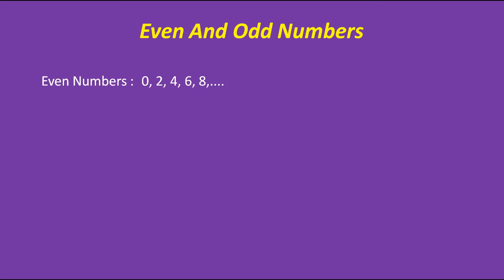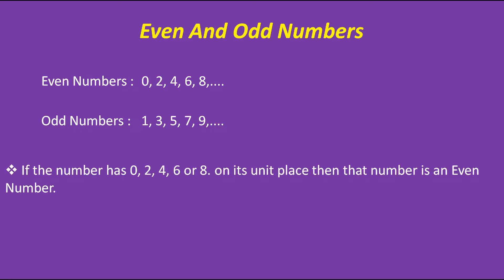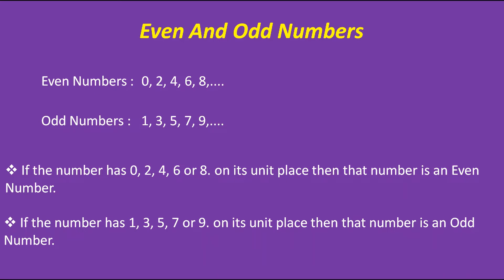Before that, I just want to recall about even and odd numbers. As you all know, even numbers are 0, 2, 4, 6, 8 and so on, and odd numbers are 1, 3, 5, 7, 9 and so on. If you get any number which is more than two digits, how are you going to recognize whether that number is even or odd? For that, you have to remember the rule: if the number has 0, 2, 4, 6 or 8 on its unit place, then that number is an even number, and if the number has 1, 3, 5, 7 or 9 on its unit place, then that number is an odd number.